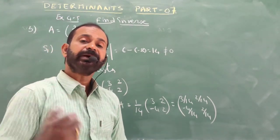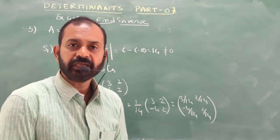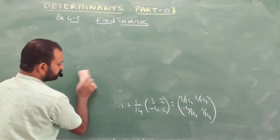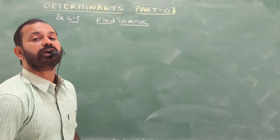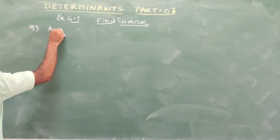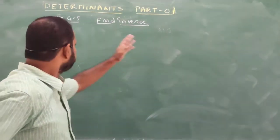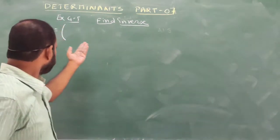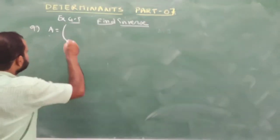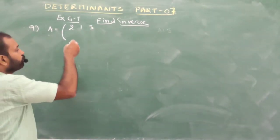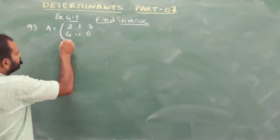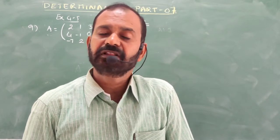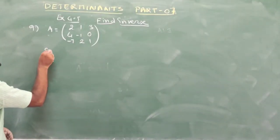Now let me take a 3×3 matrix example to find the inverse. Let A = [2, 1, 3; 4, -1, 0; -7, 2, 1]. First step: find the determinant. Expanding along R1: det A = 2×det[-1, 0; 2, 1] - 1×det[4, 0; -7, 1] + 3×det[4, -1; -7, 2].